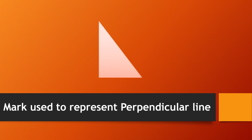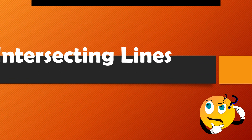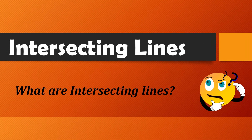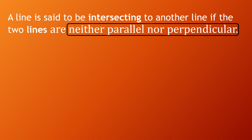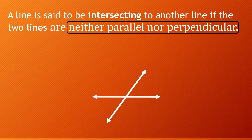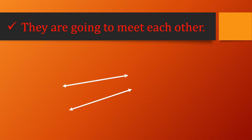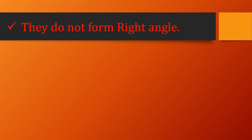We can use these marks in 2D shapes to represent perpendicular lines, and also in a right angle triangle. Intersecting lines: a line is said to be intersecting to another line if the two lines are neither parallel nor perpendicular — they meet each other, which negates the property of parallel lines, and they do not form a right angle, so they are not perpendicular.